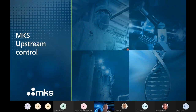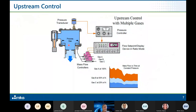We start with upstream control. Here's a simple schematic of a process chamber: the blue represents the process gas, the arrow shows the direction toward the pump, and at the top is the pressure transducer providing the pressure signal to a pressure controller. The controller compares the pressure signal with the set point and generates a control signal to a valve or mass flow controller, adjusting the flow to increase or decrease it as required to reach the right pressure.